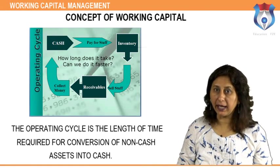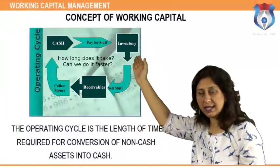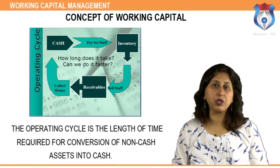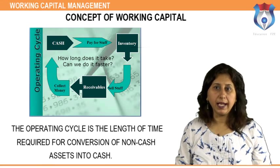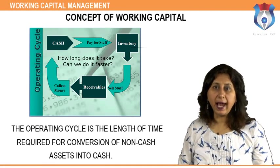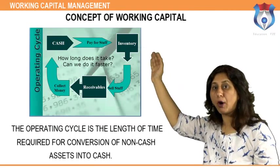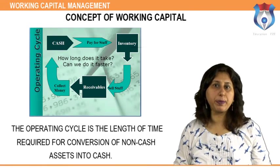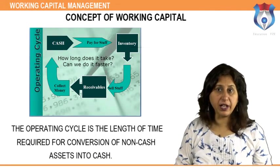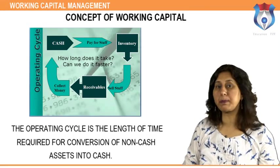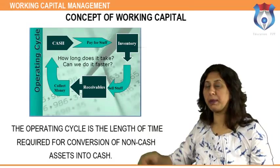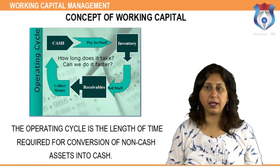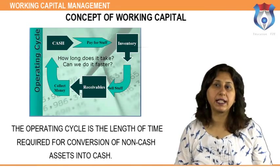The length of the operating cycle can be calculated as follows: Raw materials storage period = average stock of raw materials and stores ÷ average daily consumption of raw materials and stores. Work in process period = average work in process inventory ÷ average cost of production per day. Finished goods storage period = average finished goods inventory ÷ average cost of goods sold per day. Debtors collection period = average book debts ÷ average credit sales per day. Length of operating cycle = (1) + (2) + (3) + (4).